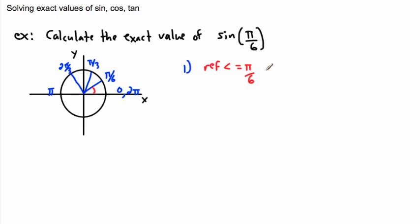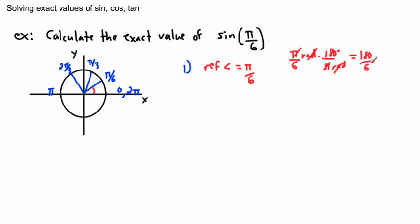How many degrees is π over 6? I can convert it: π over 6 radians times 180 degrees over π radians — the π's cancel, giving 180 over 6, which is 30 degrees. Alternatively, take 180 degrees, divide by 3 to get 60, then take half to get 30. Either way, the reference angle is 30 degrees.